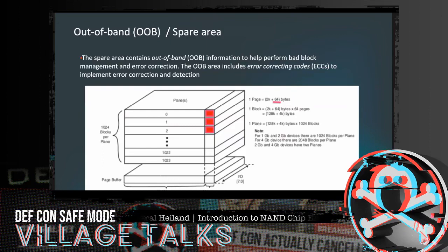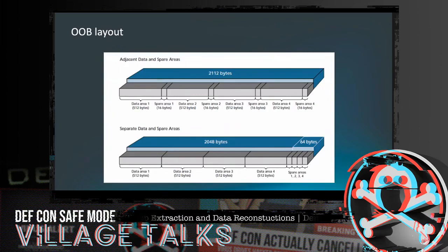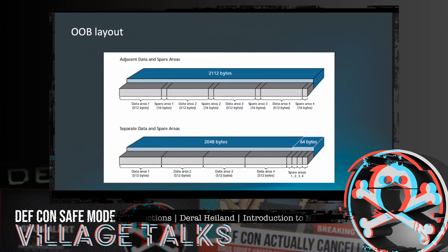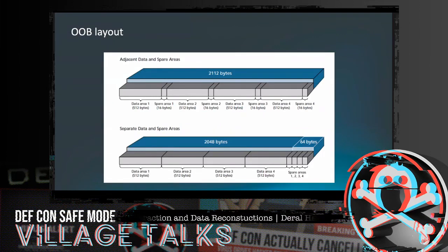The OOB area is laid out in two formats: adjacent and separate. If it's adjacent, a 2048-byte page would have 16 bytes of OOB after every 512 bytes. The most common layout I see is separate — the 64 bytes exist at the end of the 2048-byte page. But you need to verify this as you're working through the problem and trying to remove the OOB data.